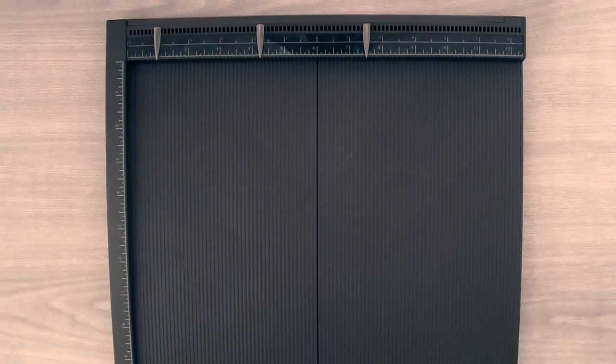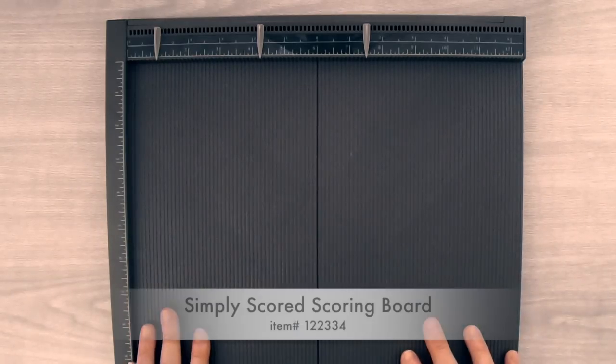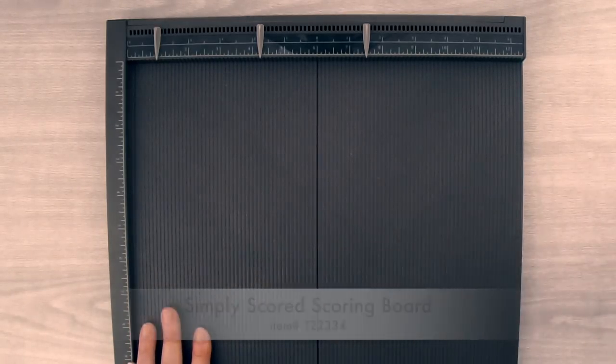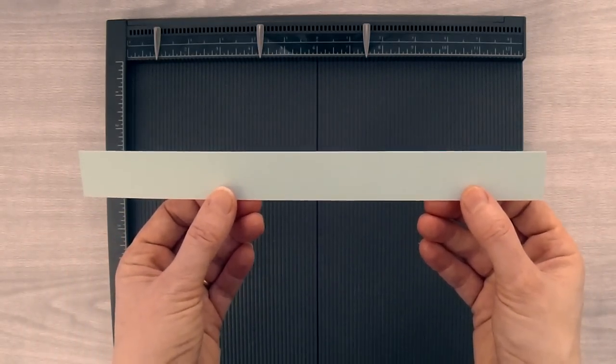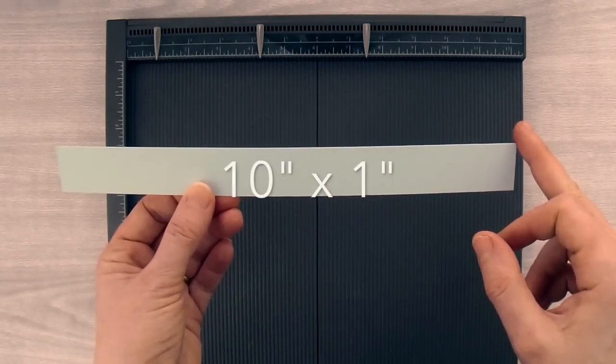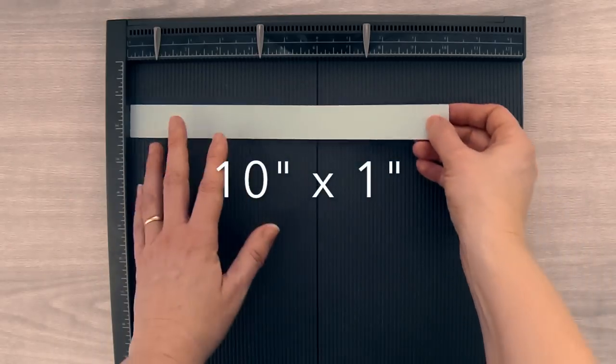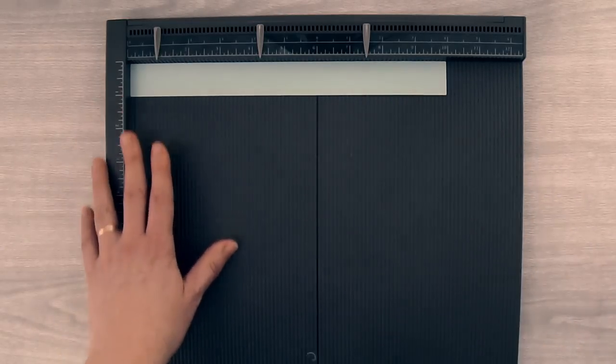The first thing we're going to do is make a template so that if you're making more than one of these, you can use that template over and over again. I've got my Simply Scored scoring board right here and a scrap piece of cardstock. I've cut this piece to 10 inches by an inch, and I'm going to put it at the top of my scoring board.